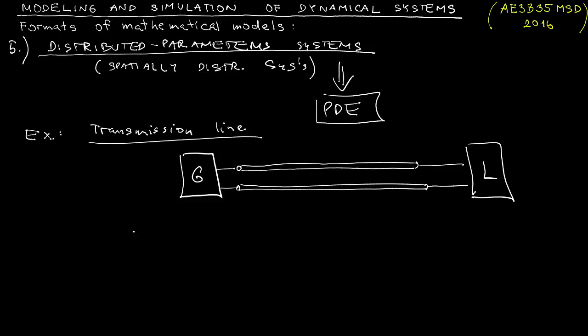Even if we disregard the losses in the two cables, still the line exhibits some dynamics, which means that when talking about voltage and current, voltage across the two cables, you need to specify where along the coordinate axis x you want to consider such voltage.